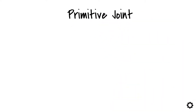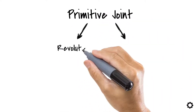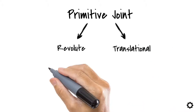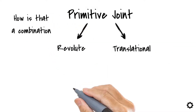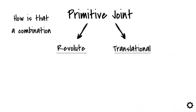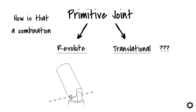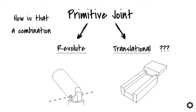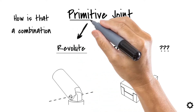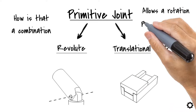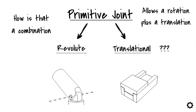A primitive joint can be seen as a combination of a revolute and a translational joint. Not literally, but close. A revolute joint only allows a relative rotation between the bodies, while a translational joint allows only a translation along a prescribed direction. In the case of the primitive joint, it allows a rotation plus a translation along a prescribed direction.